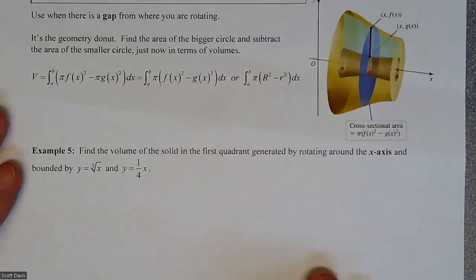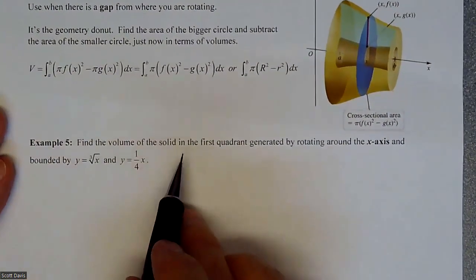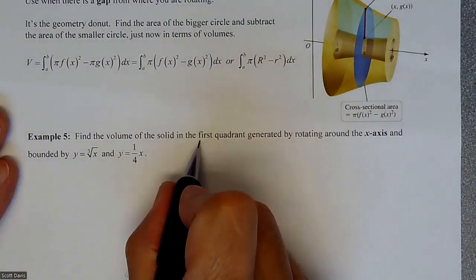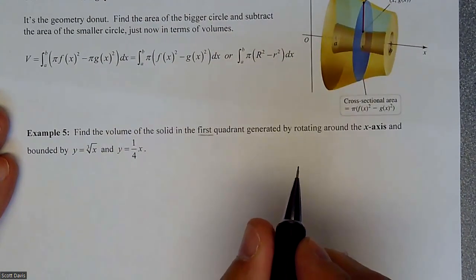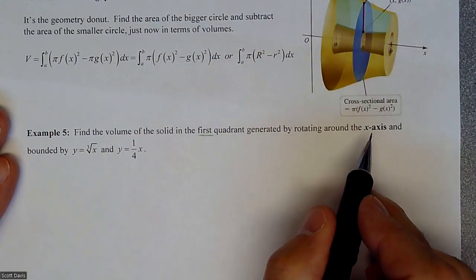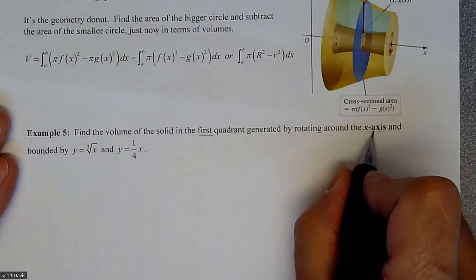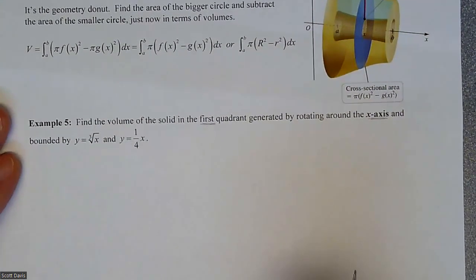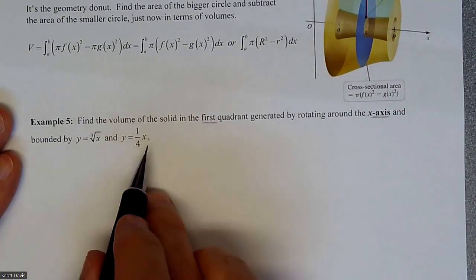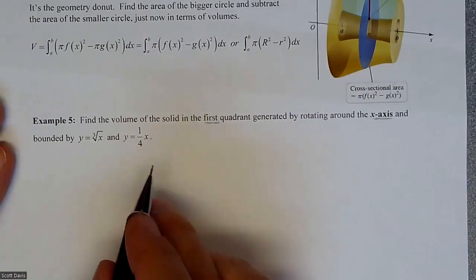Let's go to a problem. First thing is we're going to find the volume of solid in the first quadrant - key piece of information - generated by rotating around the x-axis. So x-axis means we're going to leave everything in terms of x's, and we're bounded by this information which is in terms of x's.